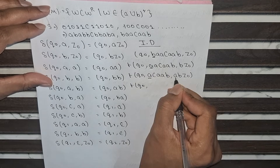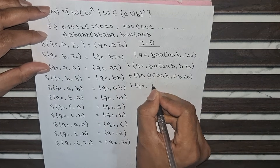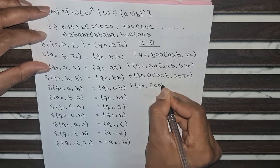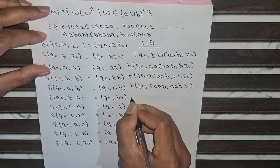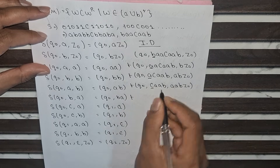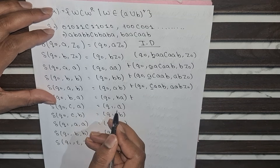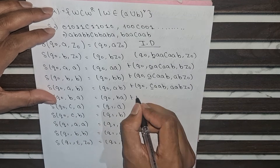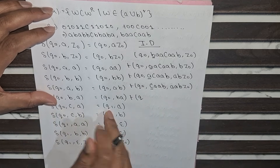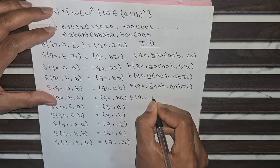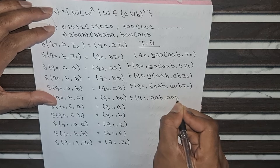The input symbol is A and the top of the stack is also A, so we push A. The configuration becomes (Q0, CAAB, AABZ0). Now C is encountered and the top of the stack is A, so we apply the transition from Q0 to Q1 and pop — C is removed from the stack. The configuration becomes (Q1, AAB, AABZ0).